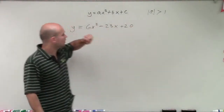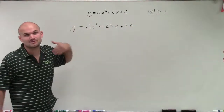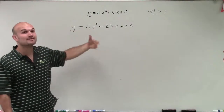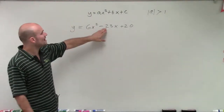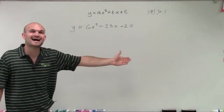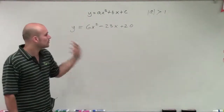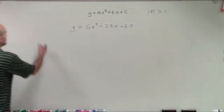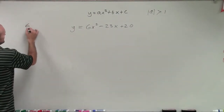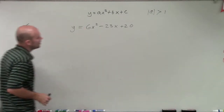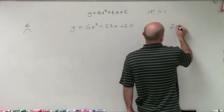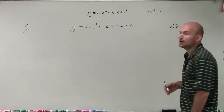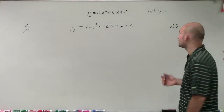We notice our a is greater than 1. The first thing we always want to do is see if we can factor out the GCF. It looks like an even number we could factor out, but when we get to our middle term, we notice that's odd. So therefore we do not have any common terms we can factor out. When looking at a problem like this, I like to break apart our a and our c into its factors so we can see what types of problems we can work on.